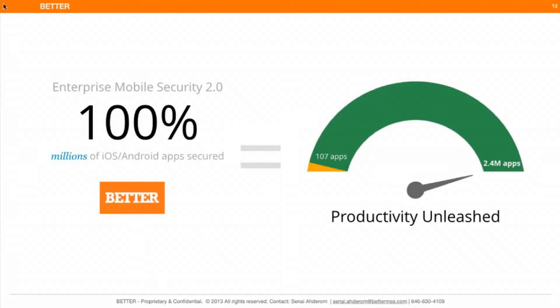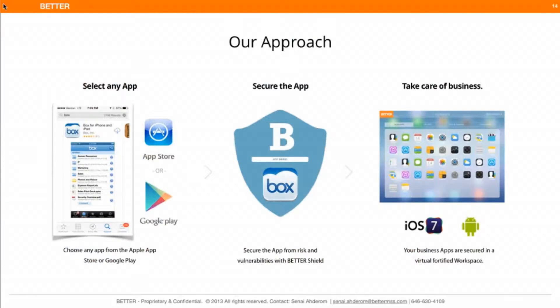Our technology is around being able to secure any app — be it a native app, be it one you get from the app store — it doesn't matter. We're able to apply security and visibility for the enterprise. Our approach is very simple: you select any app, then you analyze it based on its behaviors — what kind of risk and what kind of things it does — and then you secure it and you're able to use it in a safe workspace.